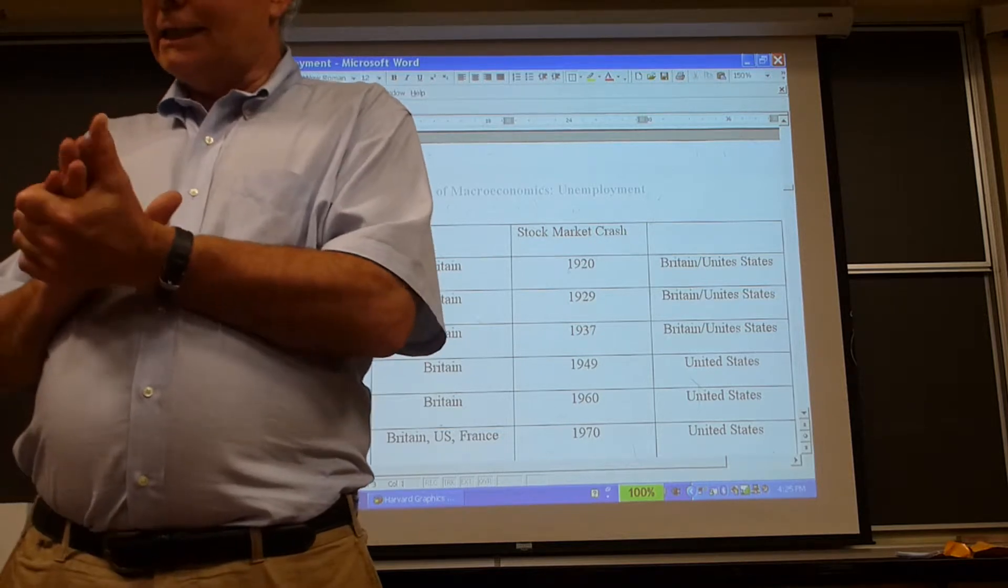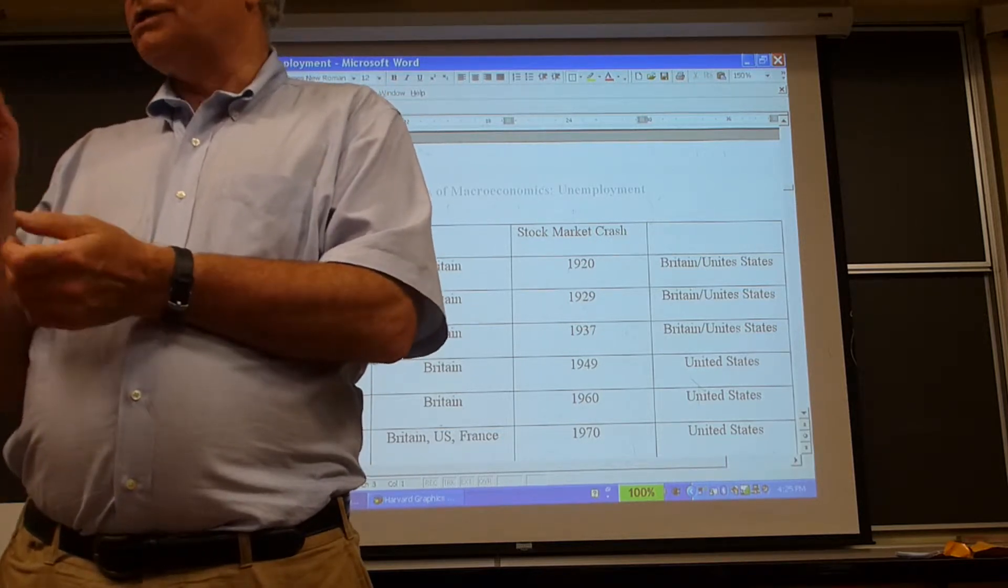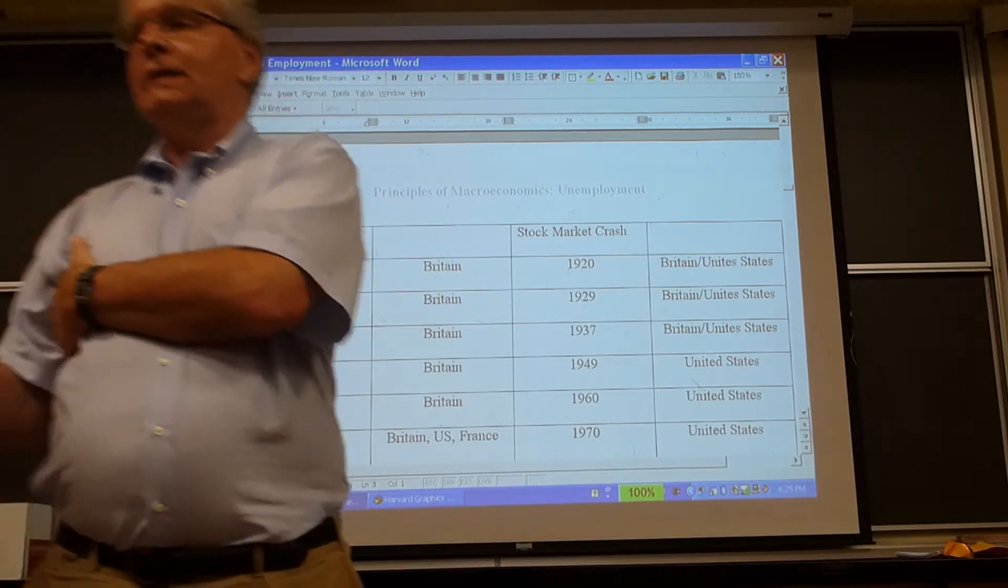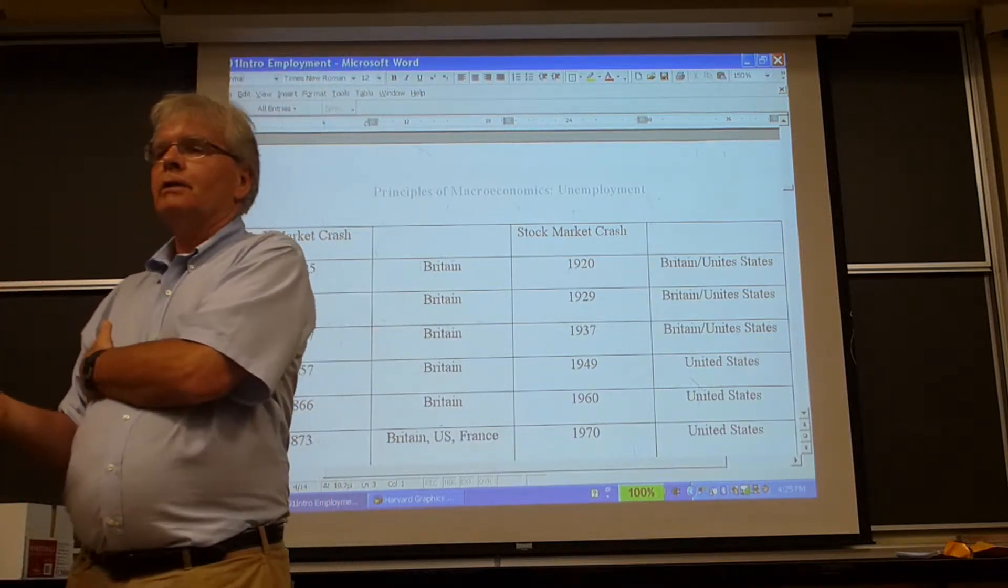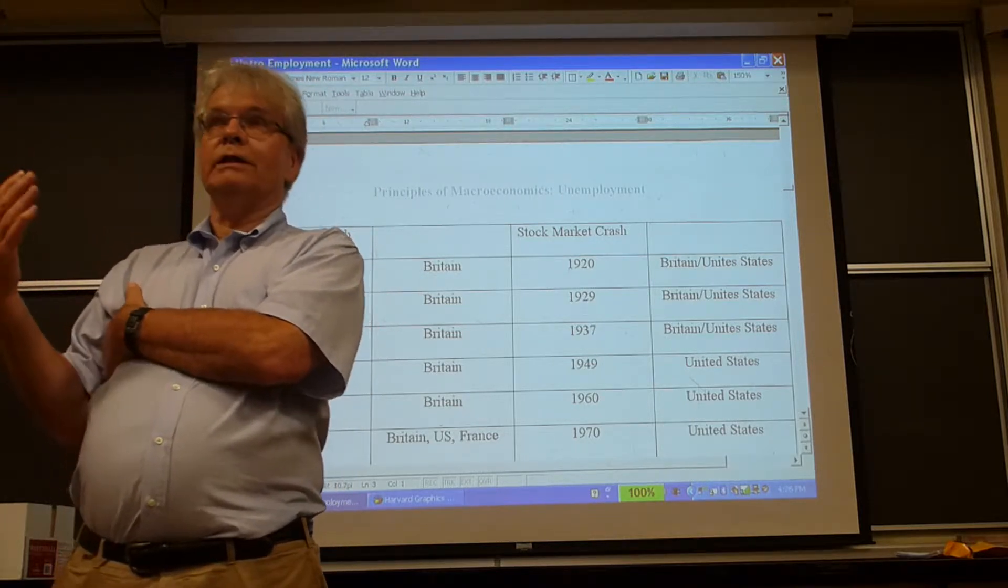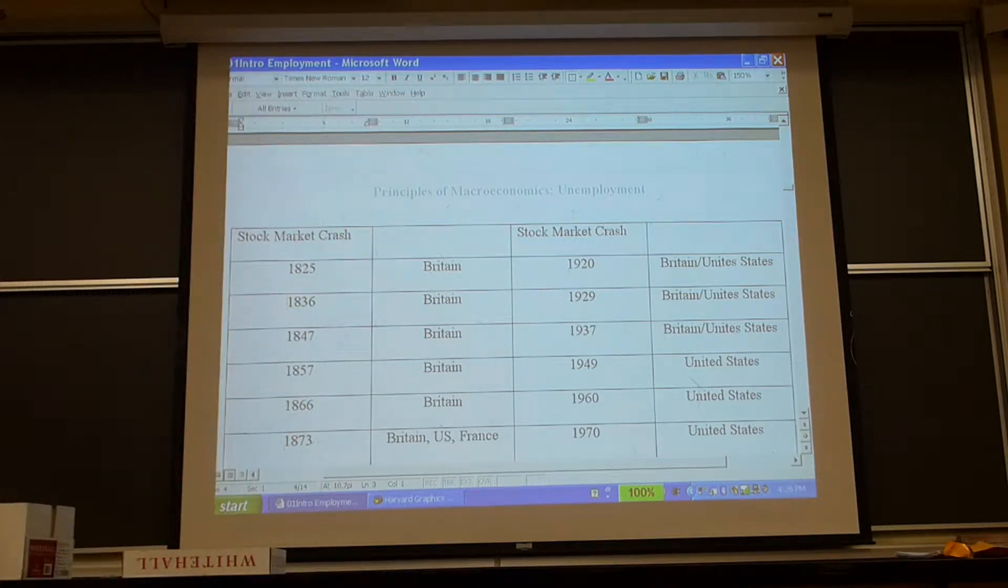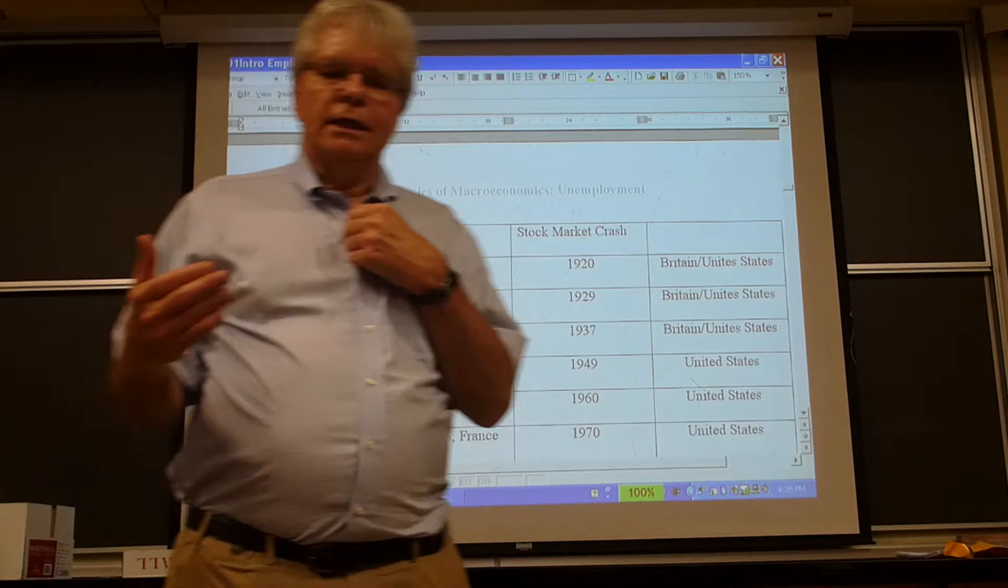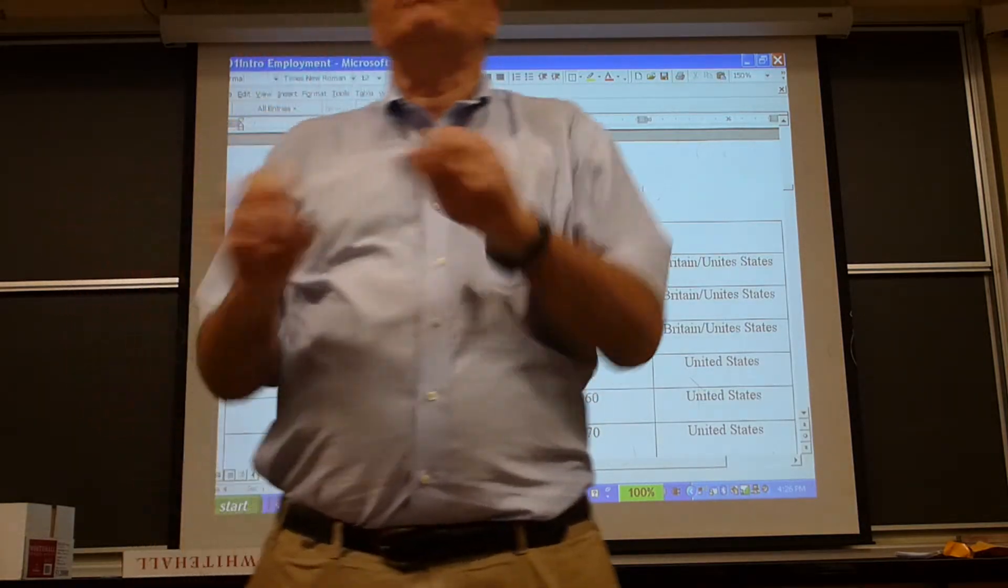By the 1860s, particularly British economists had noticed in Britain a phenomenon that roughly every 10 years there was what they called a crisis. It seemed to begin with a stock market crash. All these great recessions look like they begin with a stock market crash. At the very least, the stock market crash seems to come early on. Every 9 to 11 years there was a spectacular stock market crash.